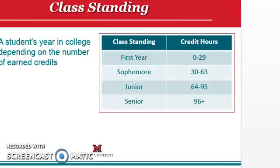Class standing is a student's year in college depending on the number of credit hours earned. A first-year student has 0 to 29 earned credit hours. A sophomore has 30 to 63 earned credit hours. Students who have 64 to 95 earned credit hours are known as juniors, and students with 96 or more credit hours are referred to as seniors.